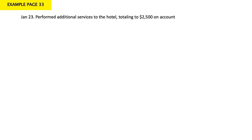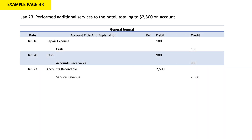On January 23, they performed additional service to the hotel totaling $2,500 on account. Again, 'on account' is the key word — we performed the service but did not get paid yet, so this is an account receivable. Account receivable is an asset, increasing in debit. When my account receivable increased with $2,500, I debit it. I debit account receivable for $2,500 and credit service revenue by $2,500, since revenue increases in credit.